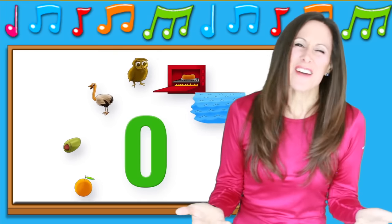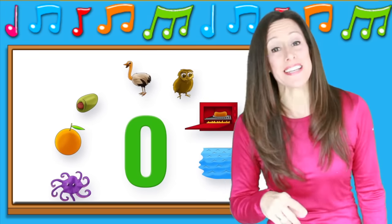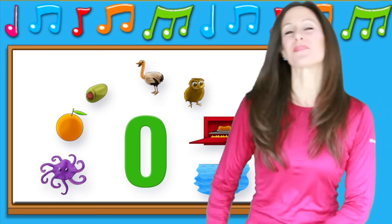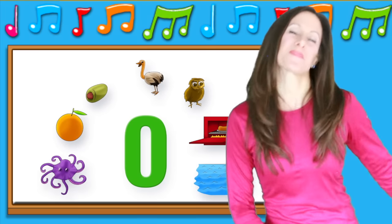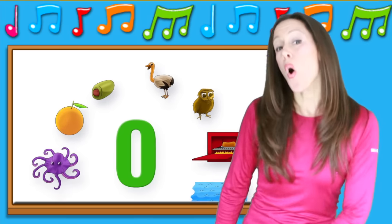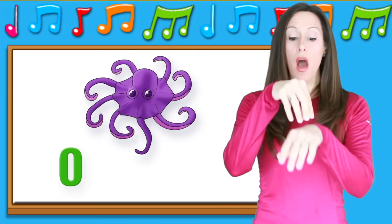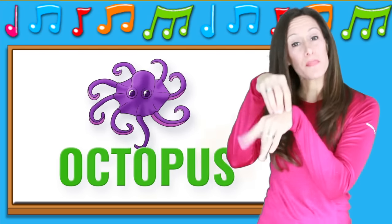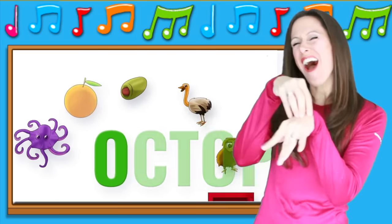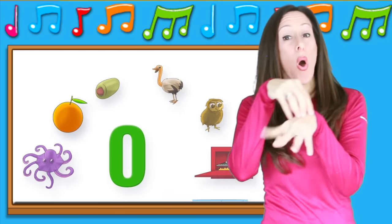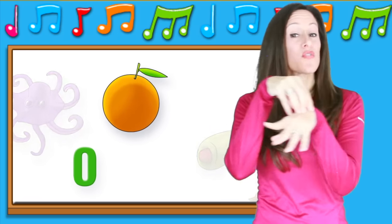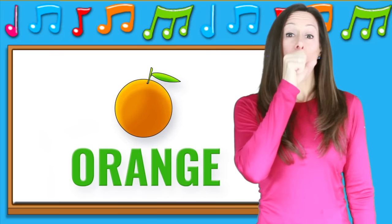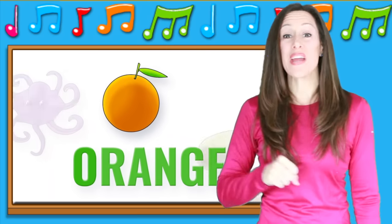Now you know it. Let's repeat it and sing it again. O is for o-o-octopus, o-o-octopus, o-o-octopus. O is for o-o-orange, o-o-orange.